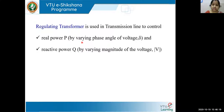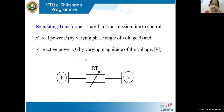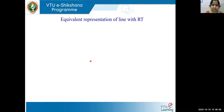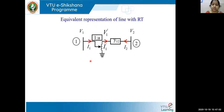The regulating transformer is placed in the transmission line mainly to control these two parameters: real power and reactive power. We need to know exactly which bus the regulating transformer is connected near — bus one or bus two — because it matters when solving the problem. We'll look at the equivalent representation of the line in the presence of the regulating transformer.